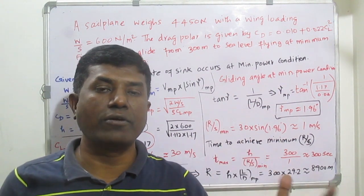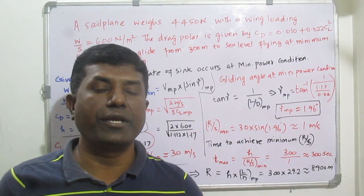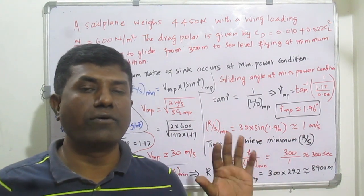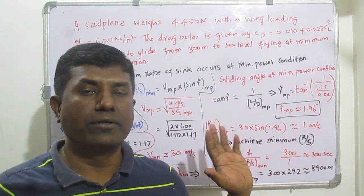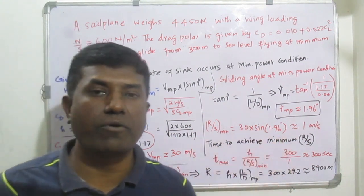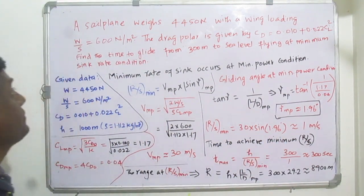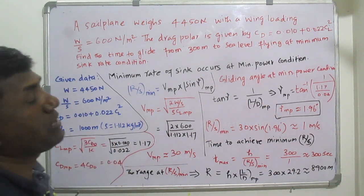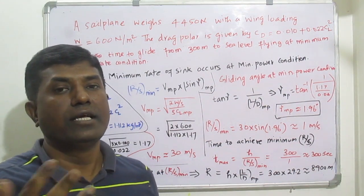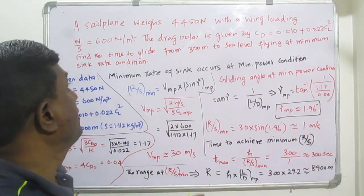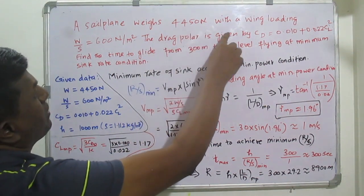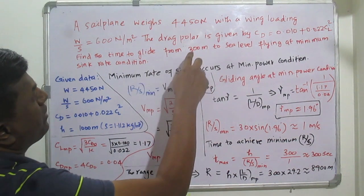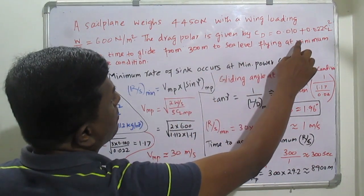Let's see how we find the required conditions asked in the problem. The problem says 'safe plane' — that means it is a glider. The glider weighs 4415 newtons with a wing loading W/S of 600 newton per meter square.